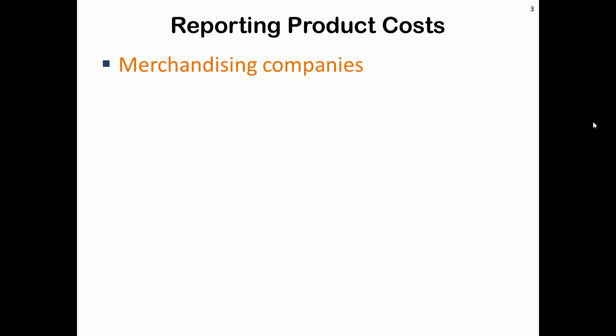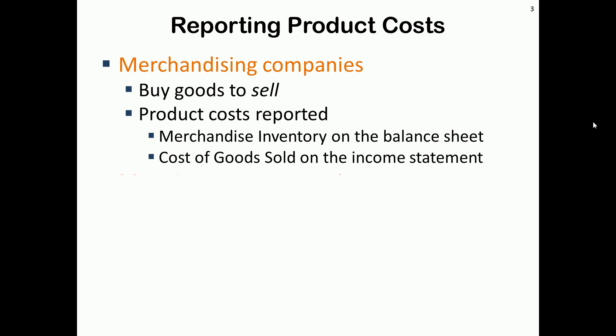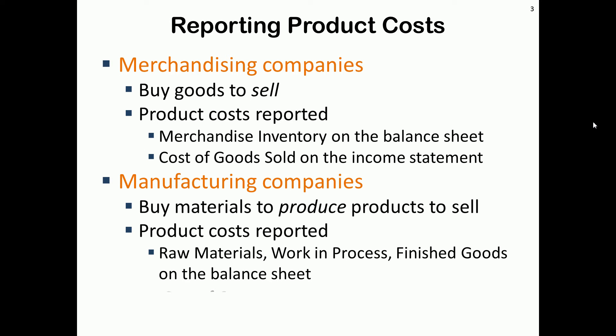Merchandising companies buy products and sell them. Their product costs are reported on the income statement as cost of goods sold and on the balance sheet as one single inventory account, typically referred to as merchandise inventory. Manufacturing companies buy materials to produce products and ultimately sell them. Product costs are reported in three inventory accounts on the balance sheet: raw materials, work in process, and finished goods. On the income statement, cost of goods sold is reported as a single line item.